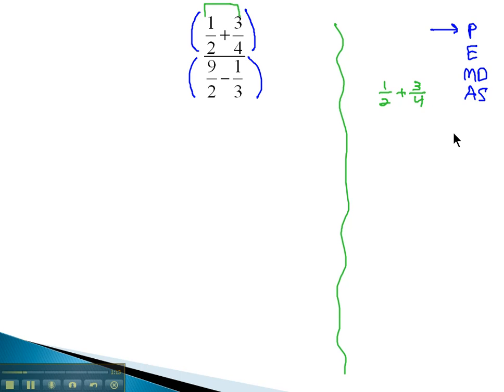We know in order to add fractions, we need a common denominator, and the common denominator here is going to be four. So we need to multiply the first fraction by two over two to get two-fourths plus three-fourths, which is five-fourths. So that numerator reduces or simplifies to five-fourths.